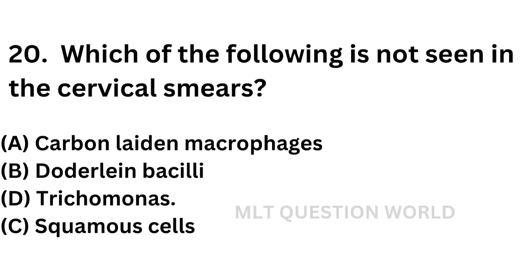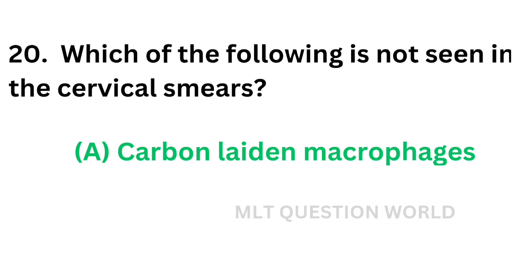Question number twenty: Which of the following is not seen in cervical smears? Option A: Carbon-laden macrophages, Option B: Doderlein bacilli, Option C: Squamous cells, Option D: Trichomonas. The correct answer is Option A — carbon-laden macrophages. It is seen in peritoneal fluid; all the others are seen in cervical smears.